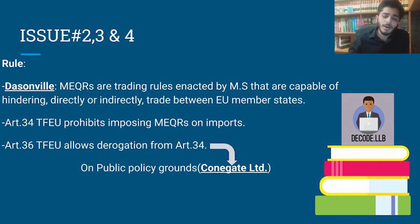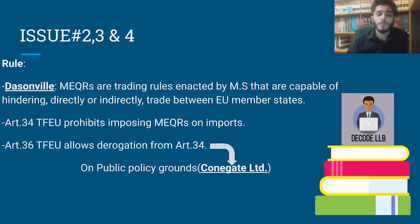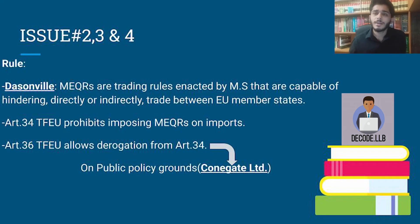Then you can use Article 34 to state that it is prohibited, and then come on to Article 36 — that the derogation ground of public policy is applicable here — and cite the case law Conegate Limited to say that Bulgaria can use the public policy ground to derogate from Article 34.